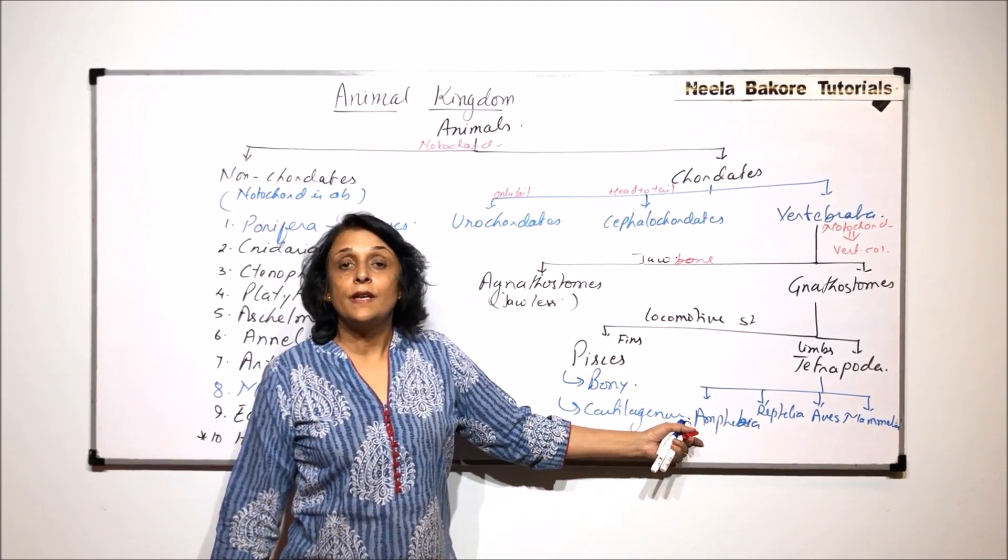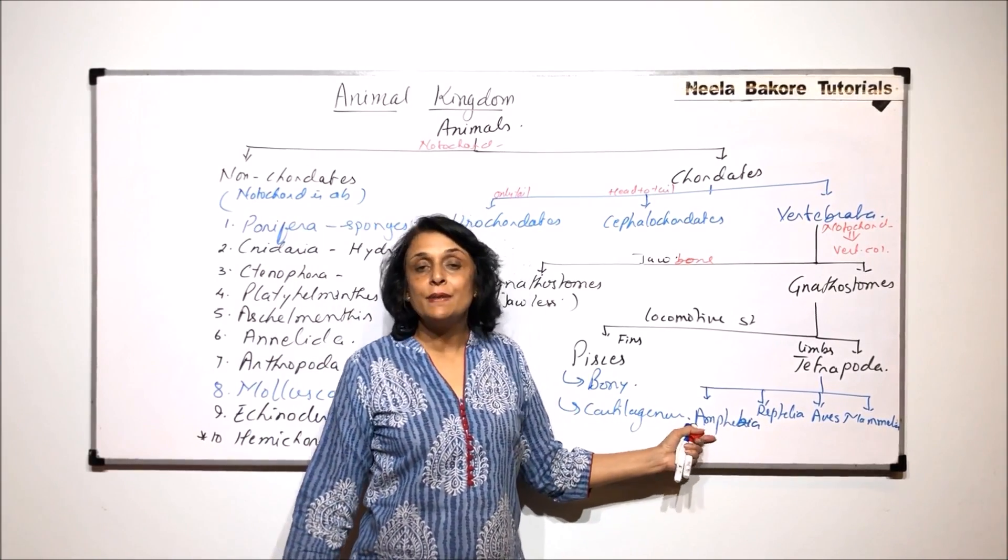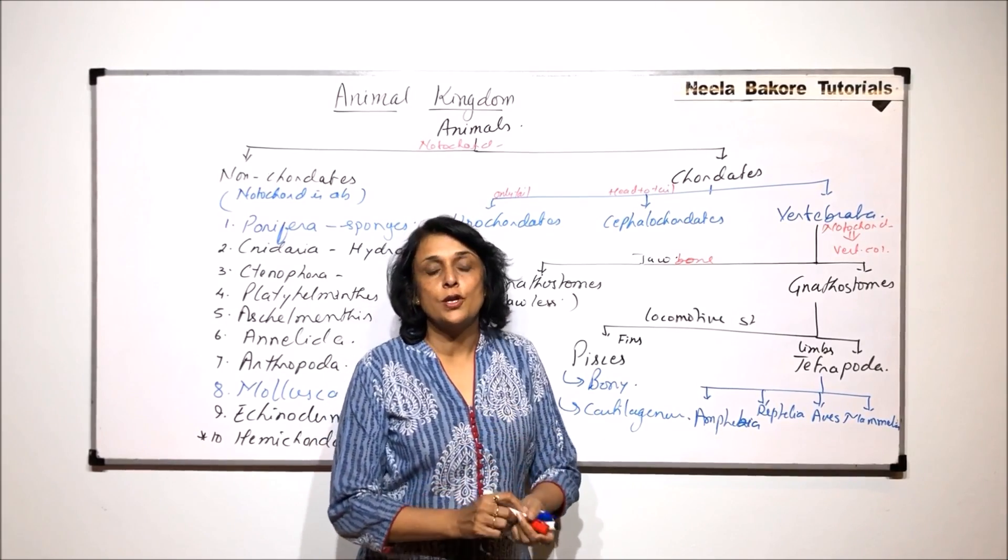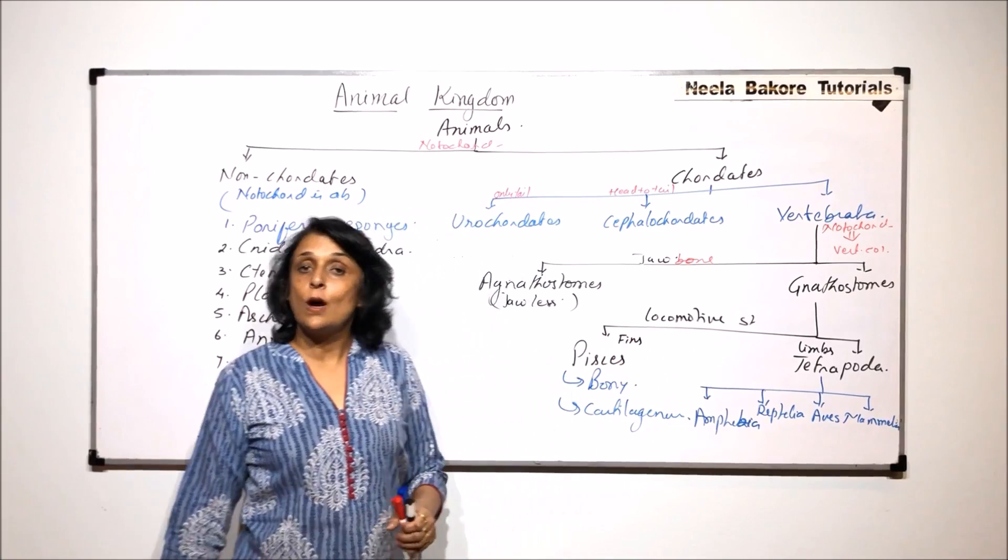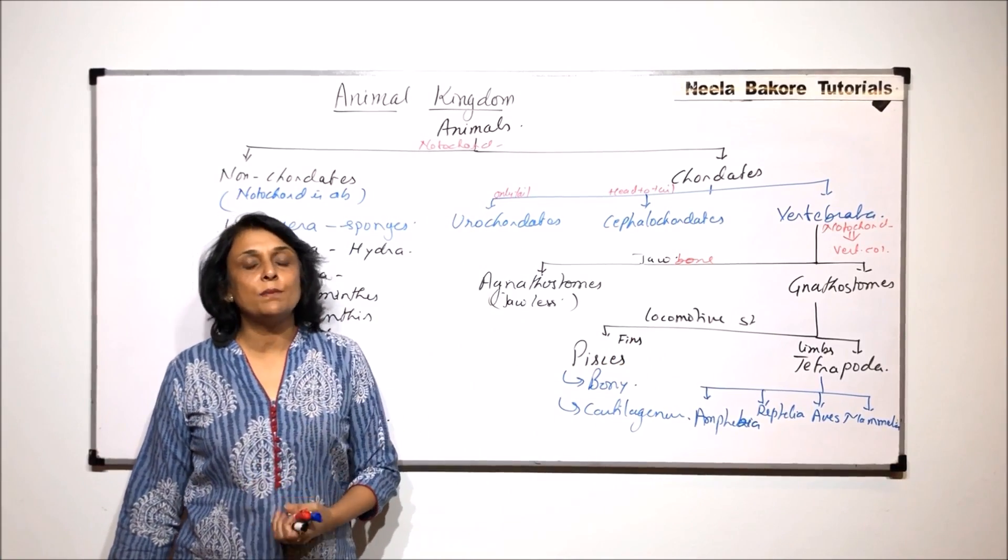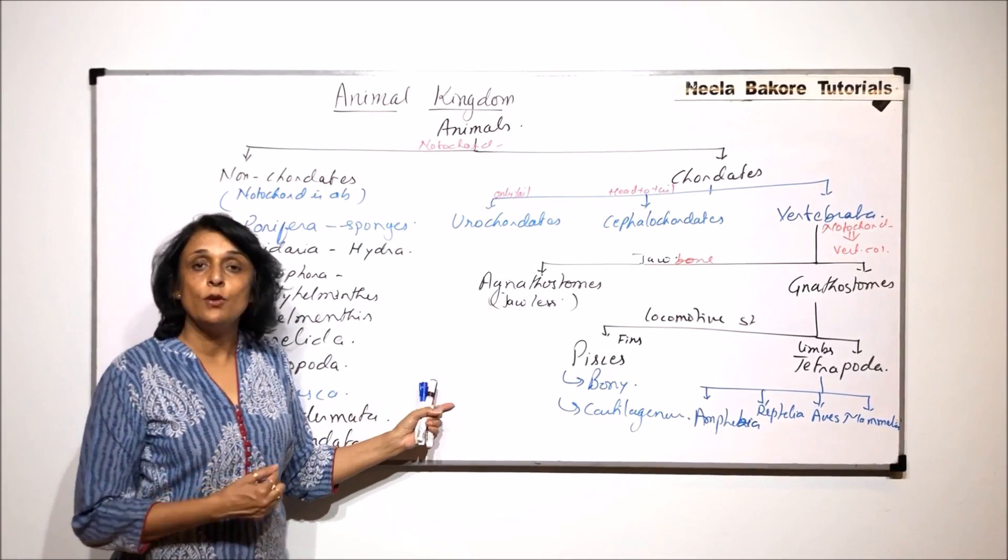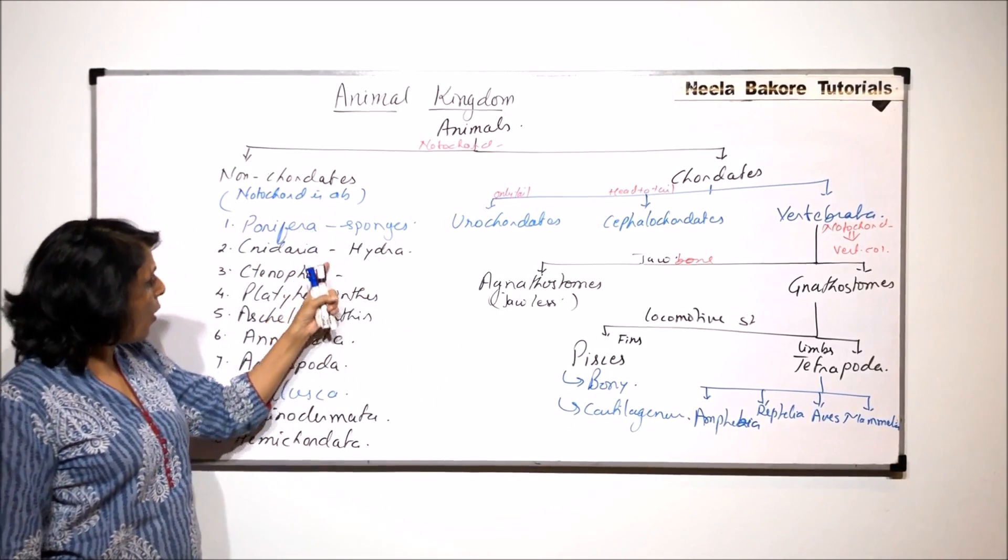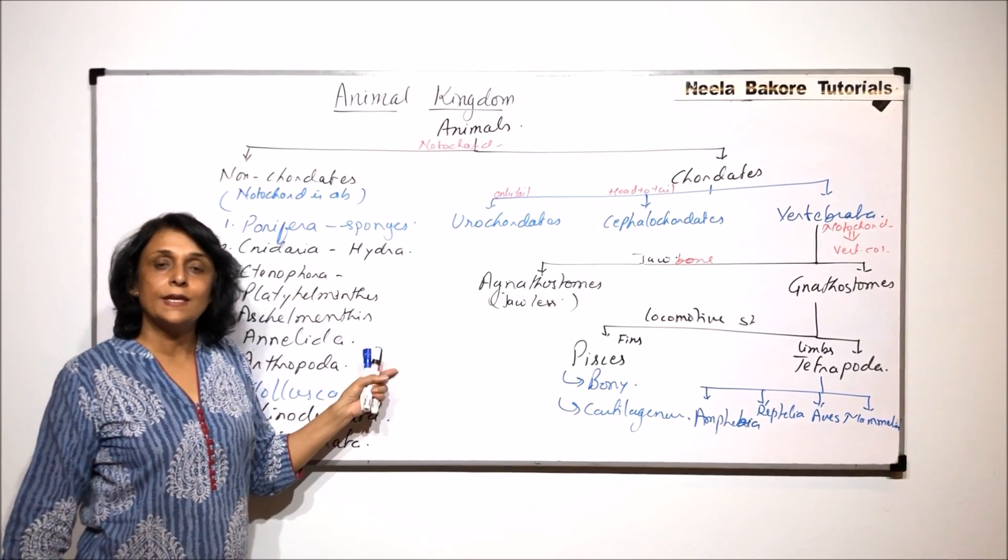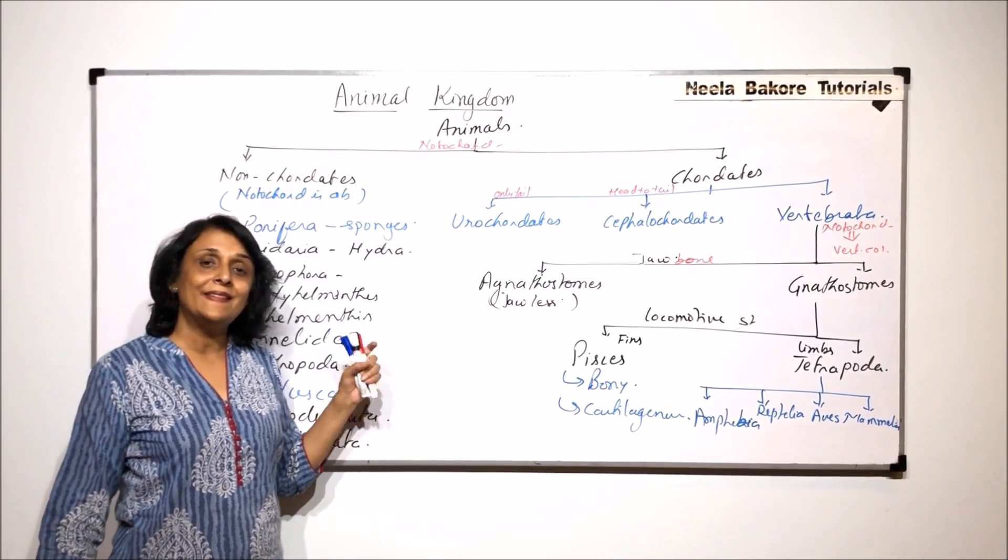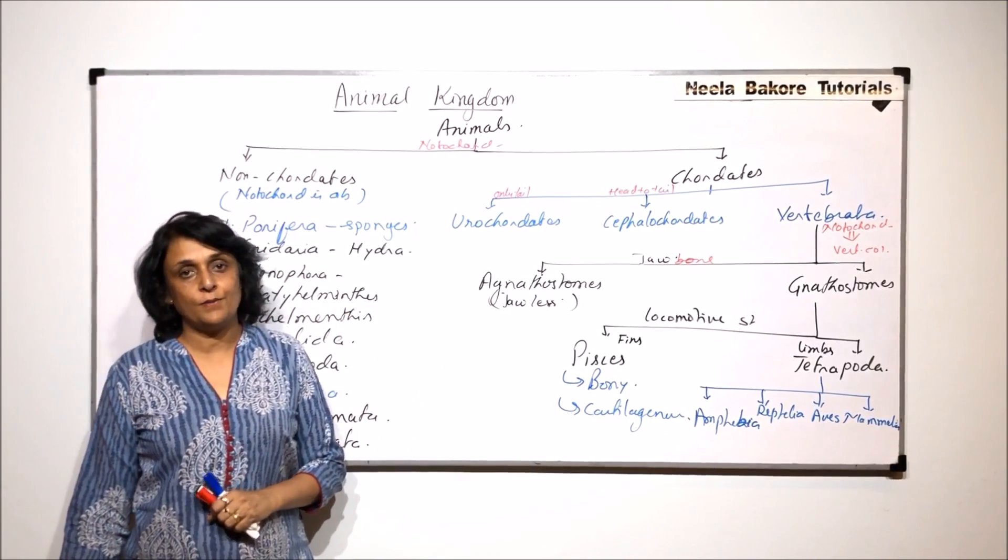And in case of tetrapods, again there are multiple things which are taken into account. That is habitat, reproduction, types of limbs, adaptations, etc. So this is how we have classified the complete animal kingdom. Now from the next class or next video, we will be talking about all these phyla one by one. We will take general characteristics of each phyla and then some important examples which are kept or included in each of these phyla.